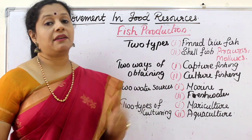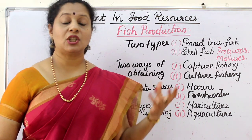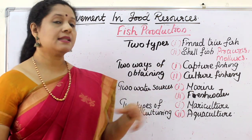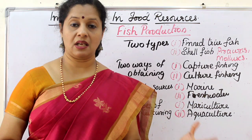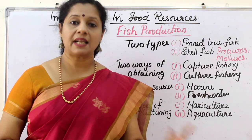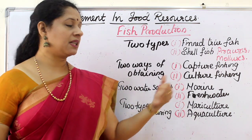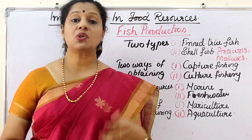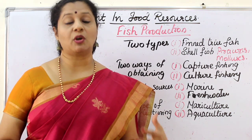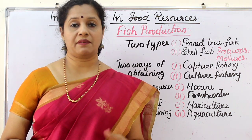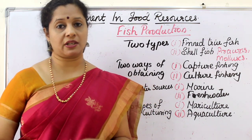Now how can we get fish, since it is a natural resource — not something we are making. There are two ways of obtaining it. One is capture fishing, where you directly go to a natural resource like a sea or inland water and capture fish. The second is culture fishery, where you culture or farm fish to increase yield.